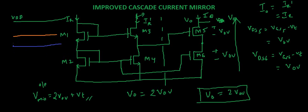So this is the output scale. This was 2 times VOV plus VT, that is VO cascade. This is V improved cascade. This is the output voltage of both of these.